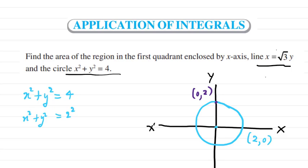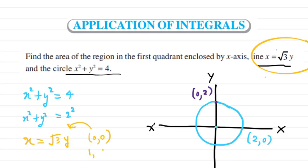Now we move to the next one, which is the line: x = √3·y. We will make a rough diagram for this. You can see this line passes through the origin (0, 0). Taking y = 1, we get the point (√3, 1) as one coordinate. Since √3 is less than 2, this point lies inside the circle, and the line goes something like this.